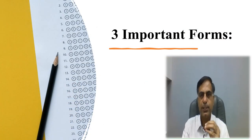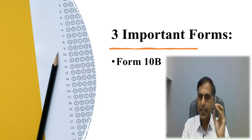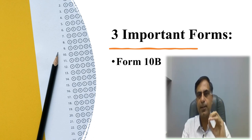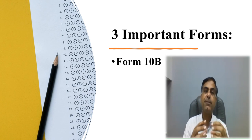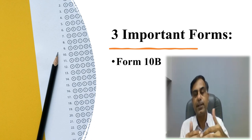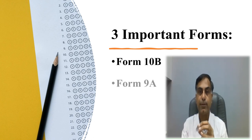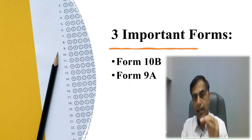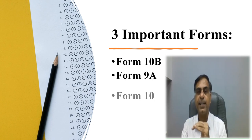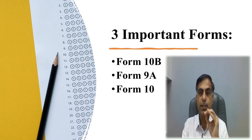So today through this video, I am trying to put up my views on three important forms which are applicable for a charitable institution or religious institution which is registered under section 12AA or new section 12 of Income Tax Act 1961. What are these three forms? One, that is form 10B. In this form 10B, what is its nature, when it is applicable, what will be its due date and what will be the effect if it is not filed. I will be also discussing form 9A and one more form that is form 10.